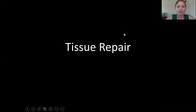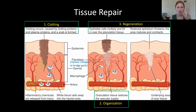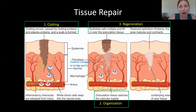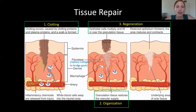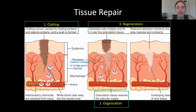Now on to tissue repair. When you get a cut, the first thing that needs to happen is to prevent blood loss, because blood vessels run through all the connective tissues in the body. We want to prevent hemorrhaging, so the first step is clotting. Platelets and plasma proteins — proteins found in the blood plasma — work together to form a clot, clogging everything up so no more blood is lost.